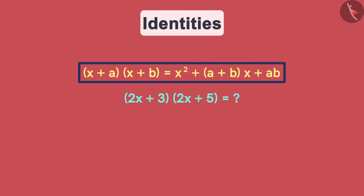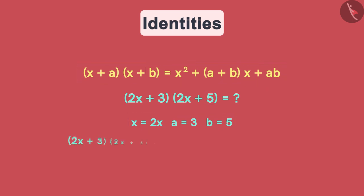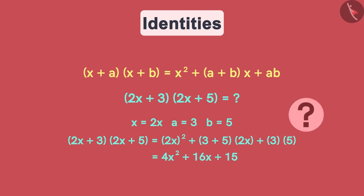We can see that x is 2x, a is 3, and b is 5. Substituting these values in this identity we will get this. After further simplification we will get this as our final answer. This was easy, right?